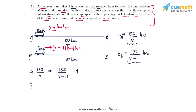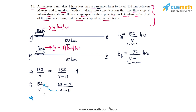We have 132/v on the left. On the right side, taking the LCM with denominator (v minus 11), the numerator becomes 132 minus (v minus 11), which gives 143 minus v. Now cross-multiplying: 132 times (v minus 11) gives 132v minus 1452.